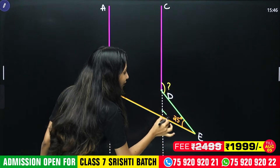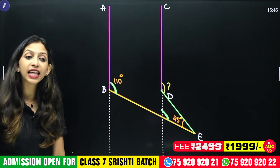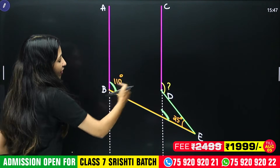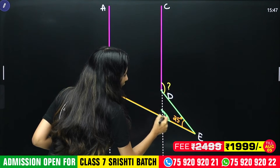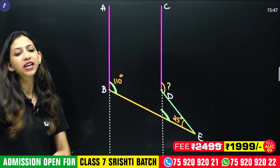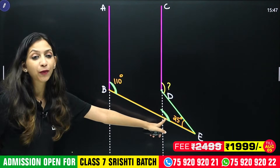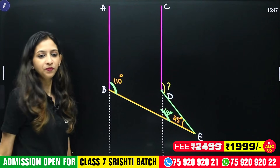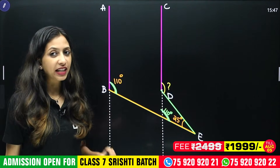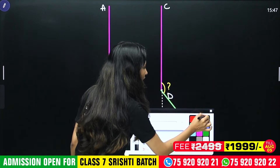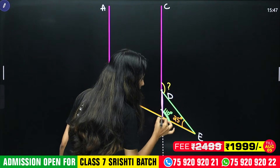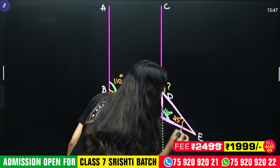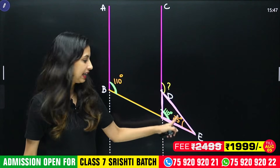There are two parallel lines. The corresponding angles are equal. If you look at this angle, this angle is obviously 110 degrees. That angle is 110 degrees. Now, if you look at this angle, this angle forms a triangle. This triangle already has 25 degrees.